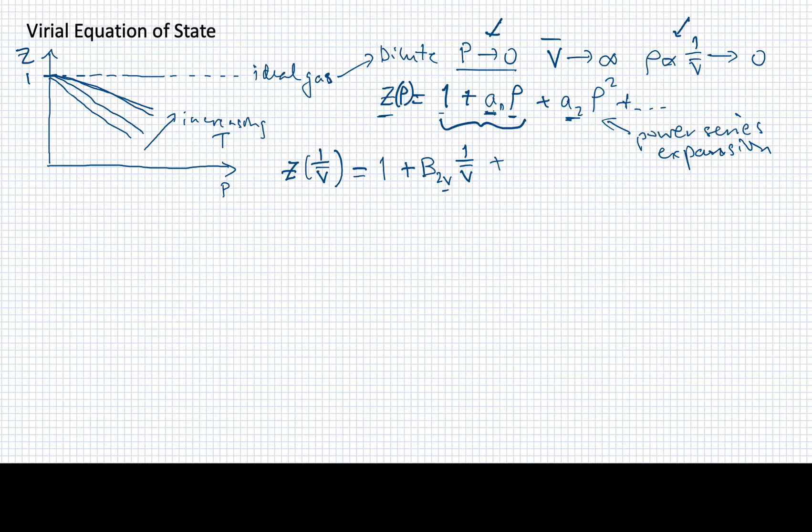We would then have a next term, which is the third term. Again, in terms of the molar volume, but now it's going to be the molar volume squared, and so forth. And what we've written out here is something that is called a virial expansion, or a virial equation of state.